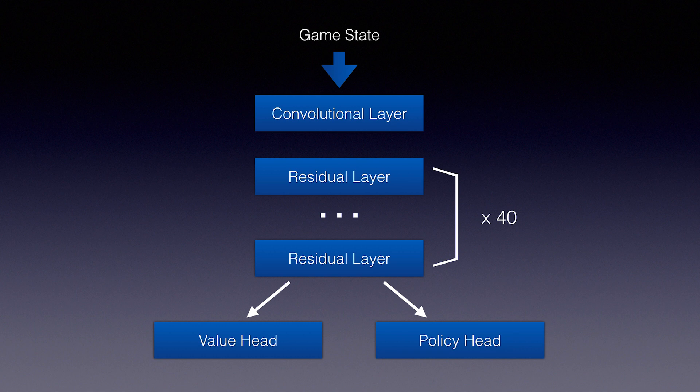At the top, the raw game data goes into a simple convolutional layer. Below that, we've got a tower of 40 residual convolutional layers. The tower then feeds into a value head, which outputs the expected value of the state, and a policy head, which outputs probabilities for each possible action. In other words, it's exactly the same output as vanilla actor-critic architecture. Now let's take a look one by one at each part.